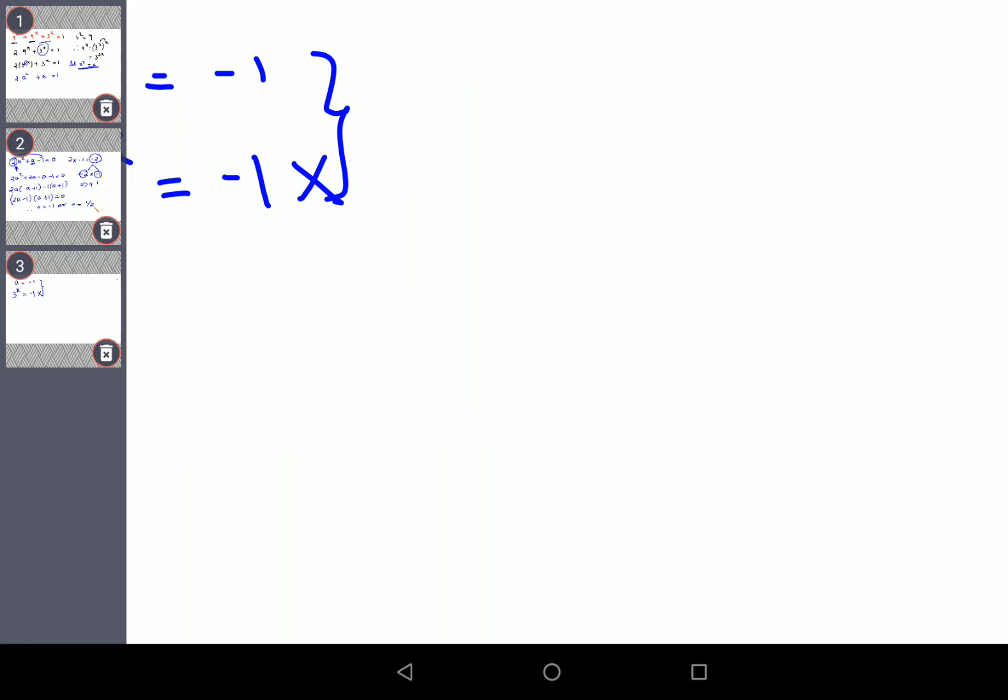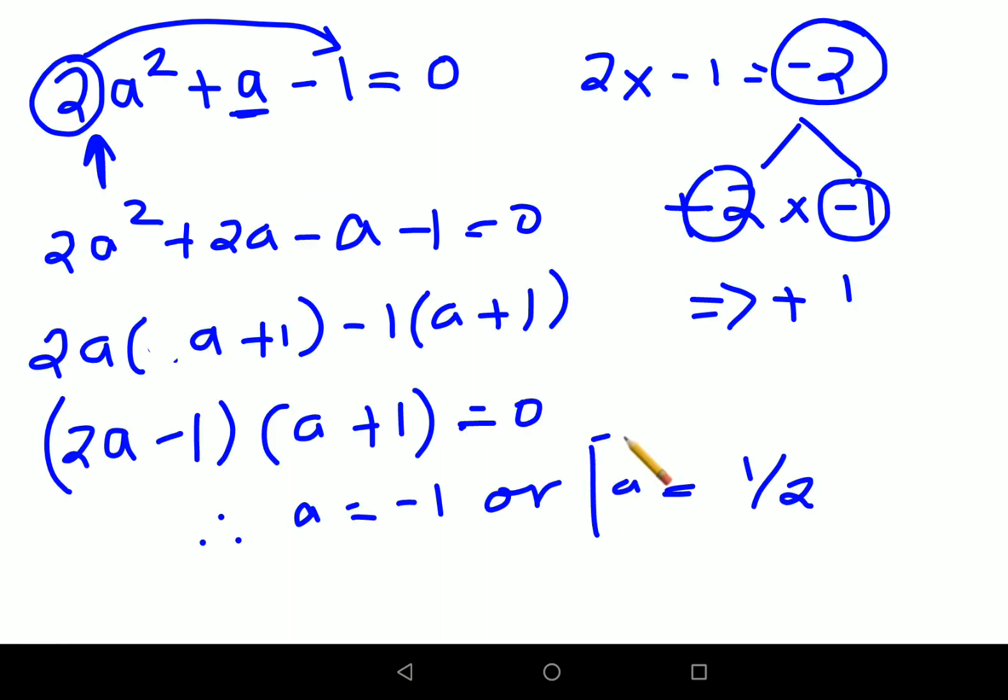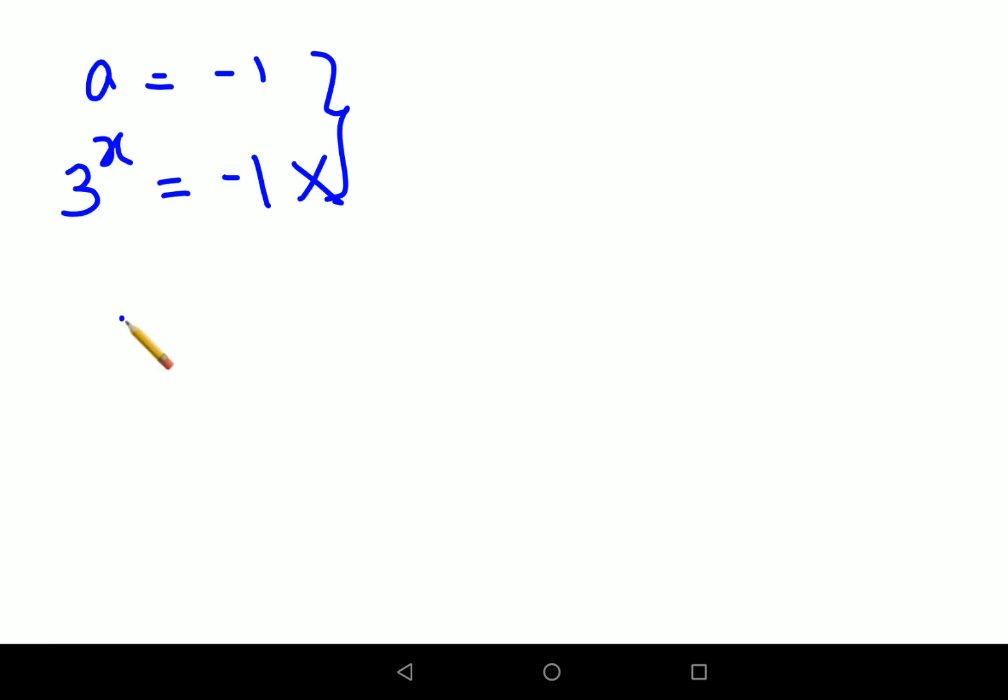So next what value we found is a equals to half. So in this case, we will say 3 raised to x equals to half. This is 1 upon 2. Taking log on both sides, what we will get is log of 3 raised to x equals to log of half.